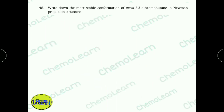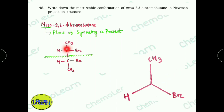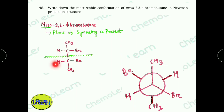Next question: Write the most stable conformation of meso-3,4-dibromobutane. Meso means the compound has a plane of symmetry. To draw the most stable conformation, we use a Newman projection. In the meso compound the two bromine atoms are in anti position relative to each other, and the other substituents (H and CH3 groups) are also anti. In this anti-conformation, all large groups are anti, making it the most stable conformation.